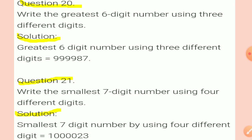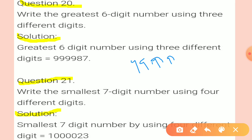Question 20: Write the greatest 6-digit number using 3 different digits. First, find what the greatest 6-digit number is. The greatest 6-digit number would be 9, 9, 9, 9, 9, 9.